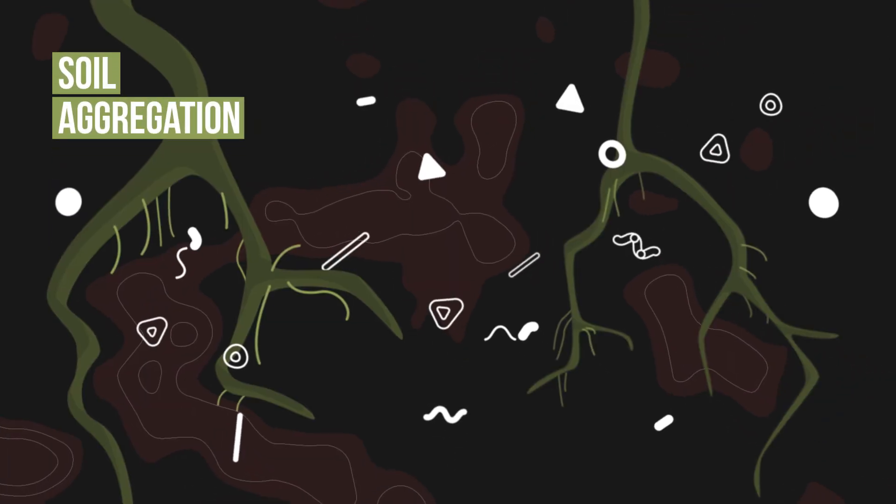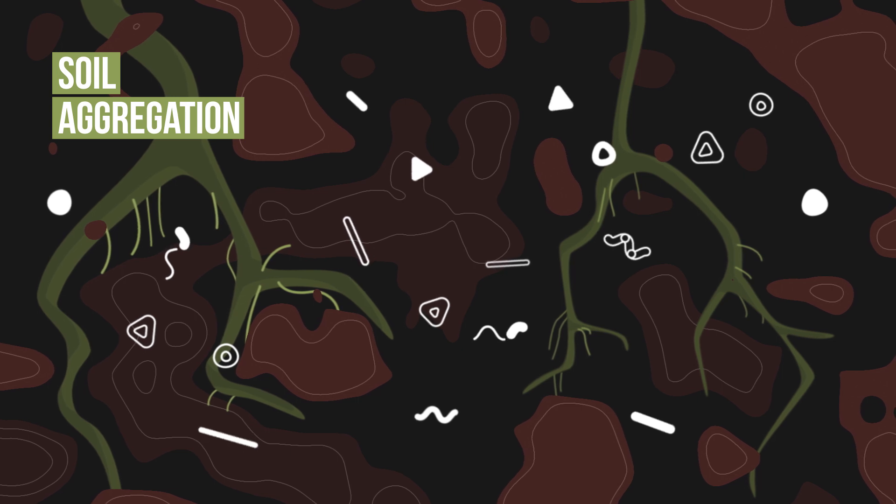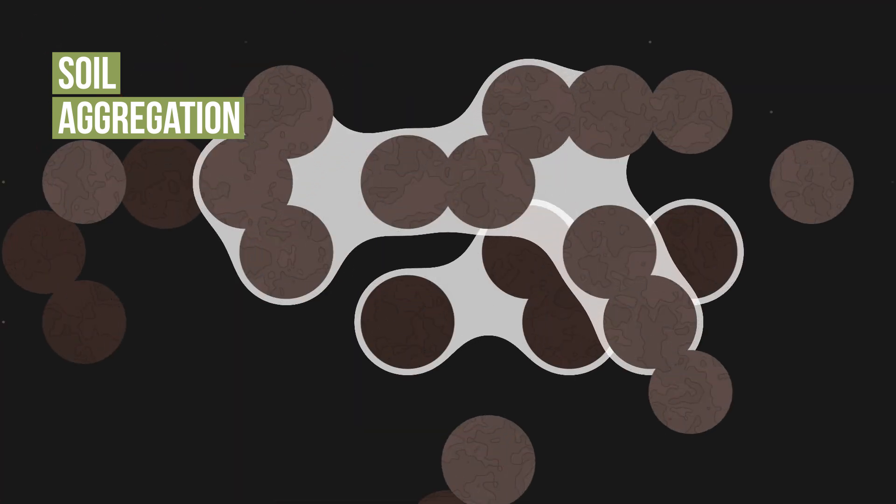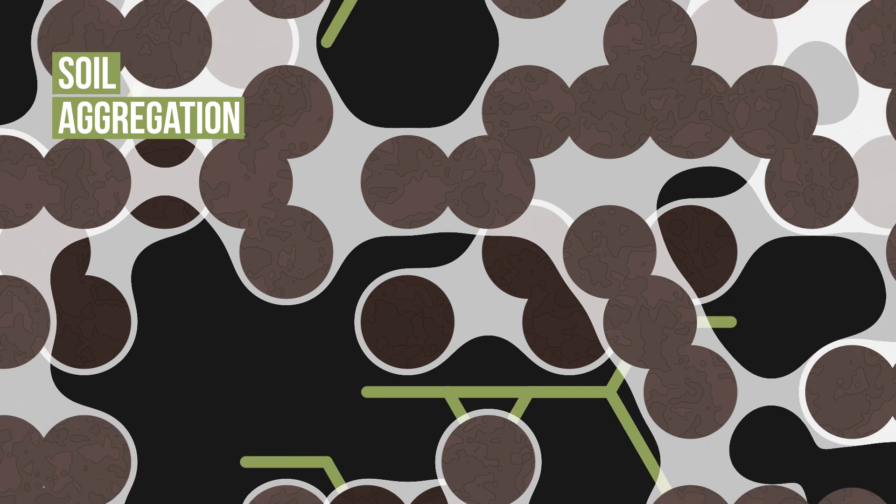Soil organisms, roots and organic matter are all involved in soil aggregation. Microorganisms help bind soil particles by producing gums and networks that enmesh the particles.